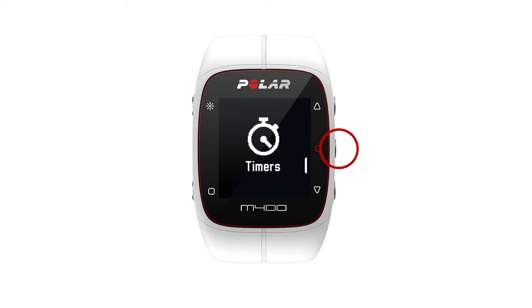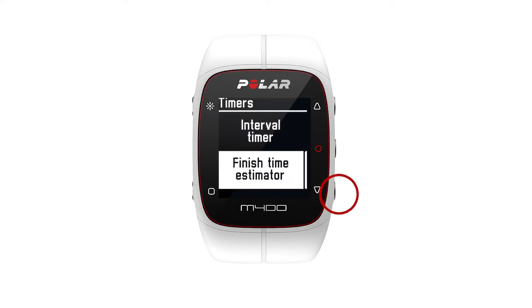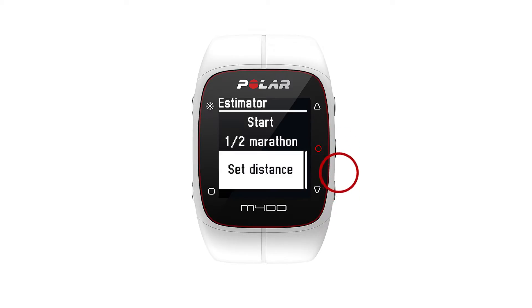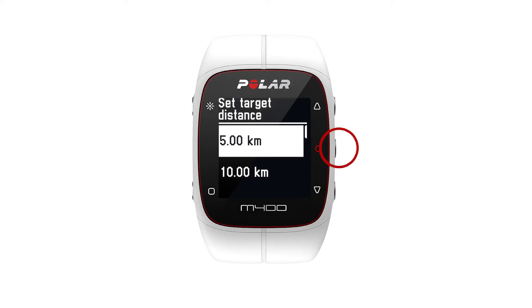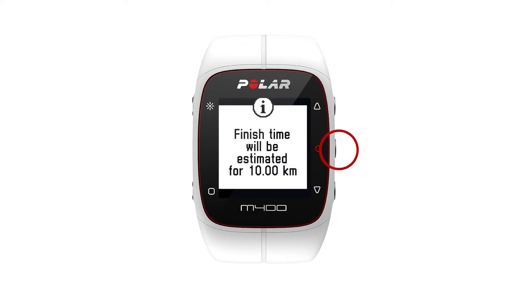Now go to Timers, then Finish Time Estimator. To set a target distance, go to Set Distance and choose 5 kilometers, 10 kilometers, half marathon, or marathon. You can also choose Set Other Distance.